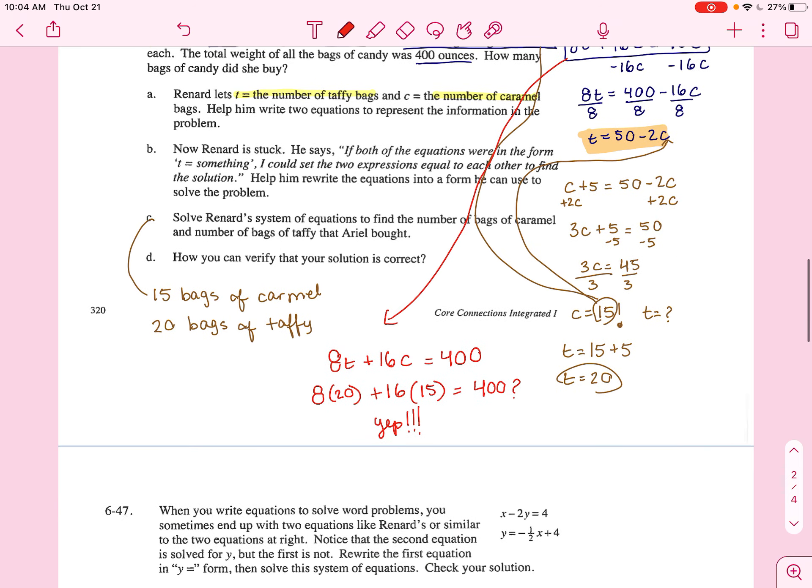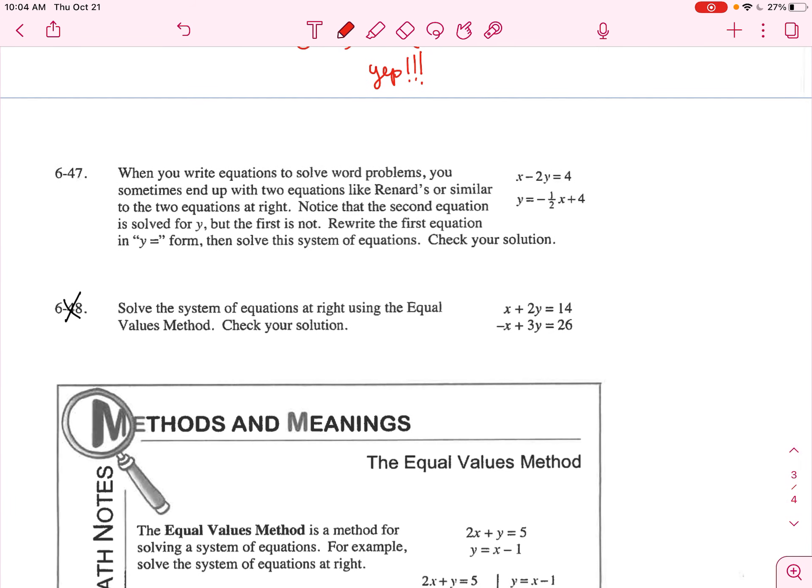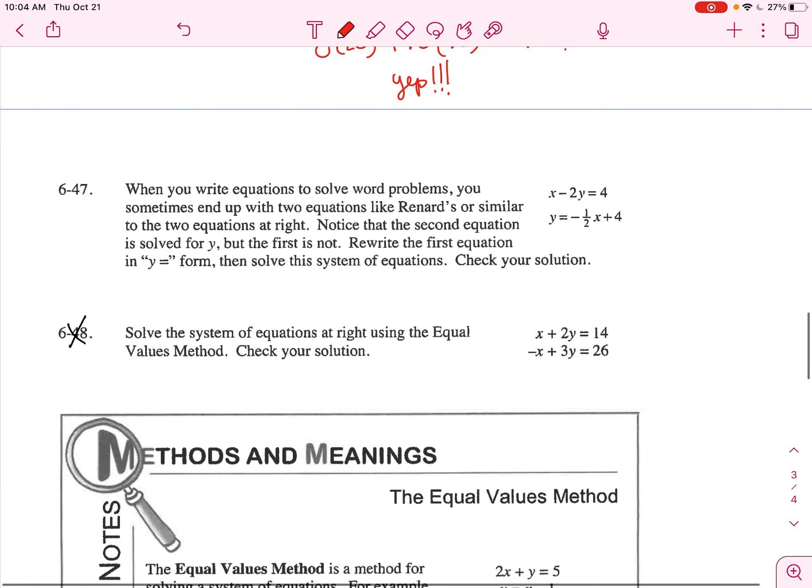We're going to skip 6-48, but I do want to look at 6-47. It says that these equations cannot be solved right now in the equal values method. We have that the second equation is in Y equals method, but this first equation is not. So you first want to, if you want to use this method, solve for Y.